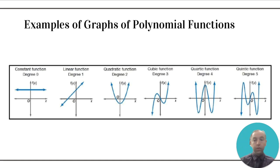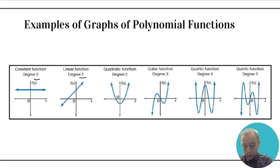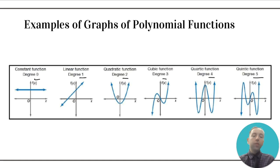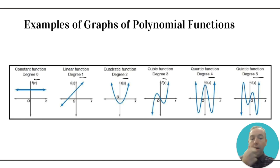Here are some examples of what graphs of polynomial functions could look like. These are polynomial functions going in order from degree zero all the way up to a quintic polynomial with degree five. Generally, as the degree gets higher, the more complex the polynomial function could look — we'll see that pattern as we look at more graphs.